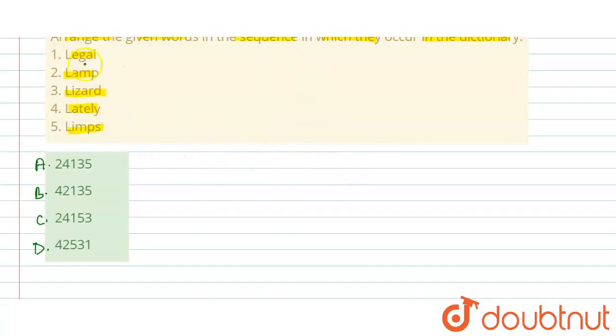So if we look at first word, the first letter is alphabetical order. L is common. So if the first letter is common, then we have to look at the second letter. Okay.